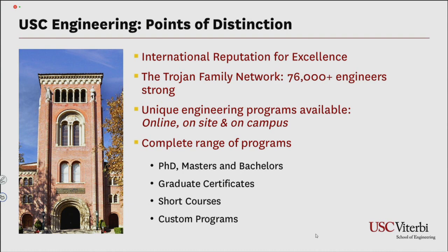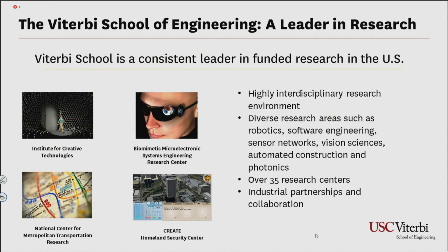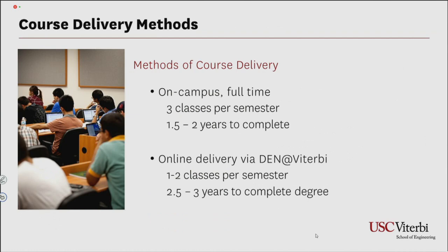A graduate certificate is about half the units of a master's degree — master's level coursework requiring only about half the units to complete. In terms of research, we are considered a leader not only within USC but within the United States, due to our highly interdisciplinary research environment. Current research areas include robotics, software engineering, sensor networks, vision sciences, automated construction, and photonics, among many others. Professor Gruntman will get into the areas relating to astronautical engineering shortly.